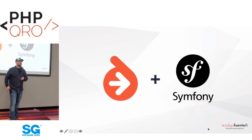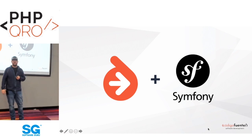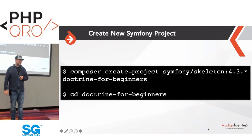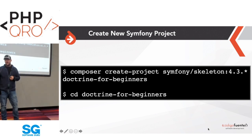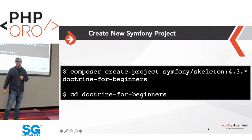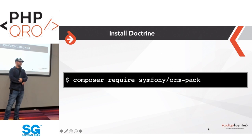All of the commands, applications, and examples in these slides are done within the context of a Symfony application. To get started, you basically just create a new directory. The composer create-project command will create everything you need to get started with your application. The first thing you want to do to start using Doctrine with Symfony is require the ORM pack.